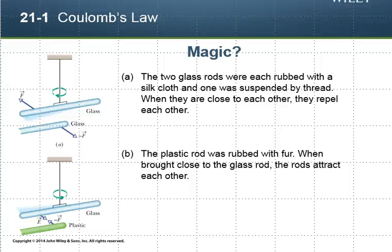If we take two glass rods, rub them with a silk cloth, and suspend one by a thread, we can actually show that they repel each other. And by repelling, I mean when you get them close to each other, there's going to be a force on this one going this way, and a force on that one going that way, pushing them apart.